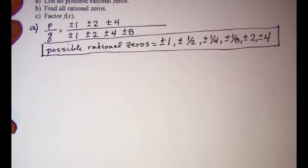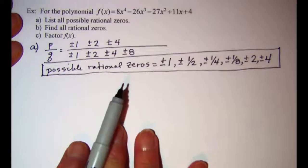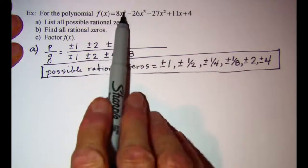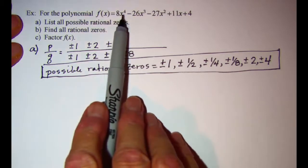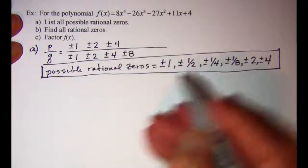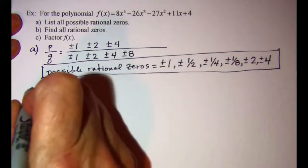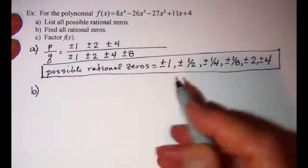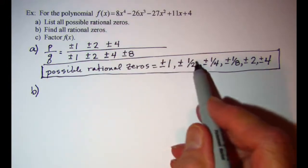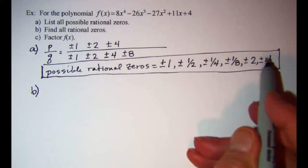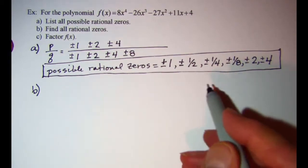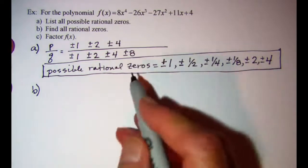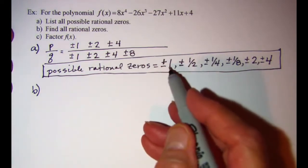For part b we want to find our rational zeros. Since this is a fourth degree polynomial, I'm only going to have four zeros at most. We'll do synthetic division with these numbers as our k value, and if we get a remainder of zero then we have a zero.